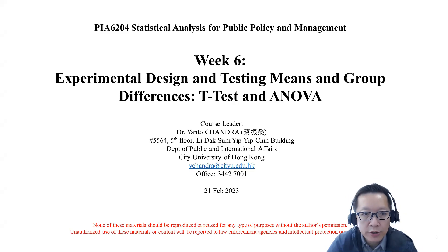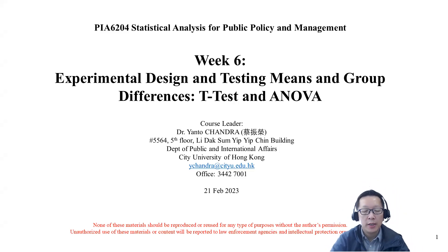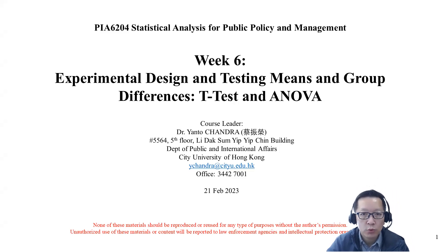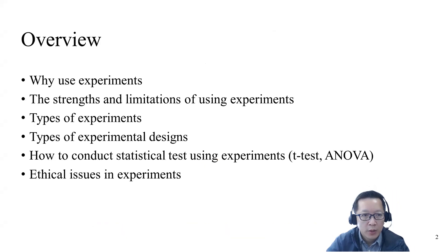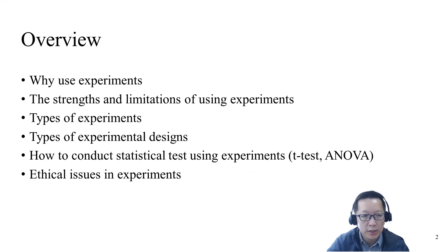Hello again, welcome to week six lecture on experimental design and testing means and group differences using T-Test and ANOVA. In this week's lecture, we're going to divide this into three sections: experimental design in general, then T-Test, and then ANOVA. We're going to look at what an experiment is, different types of experiments, their strengths and weaknesses, and how to conduct statistical analysis using T-Test and ANOVA, along with some ethical issues.